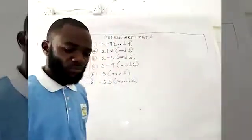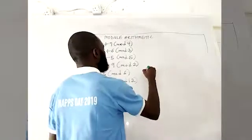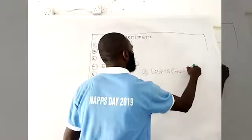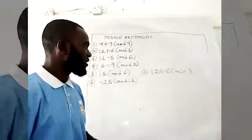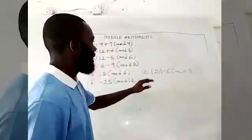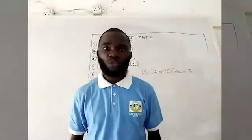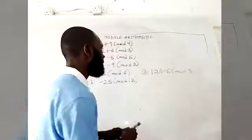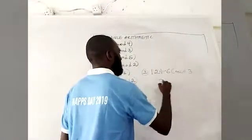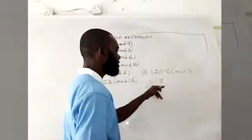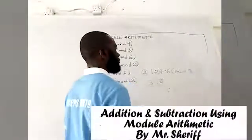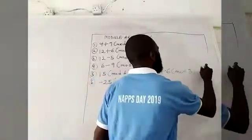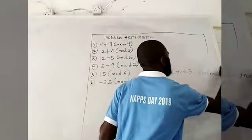For number two, 12+6 mod 3: adding 12 and 6 gives 18. Dividing 18 by the modulus 3 gives 6 remainder 0. That remainder is my answer, so 12+6 mod 3 equals 0 in mod 3.